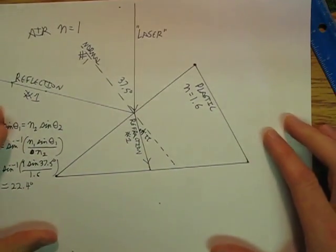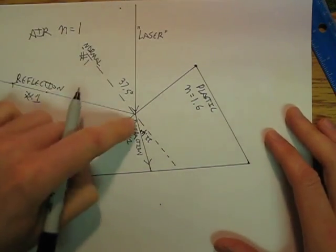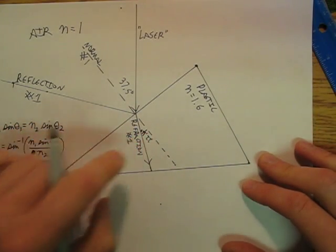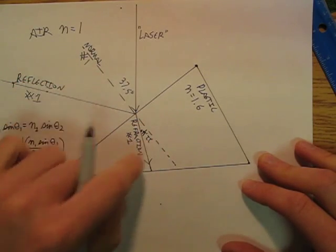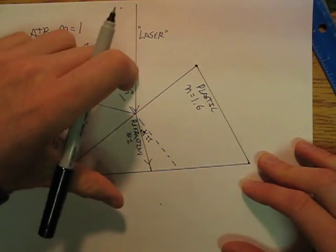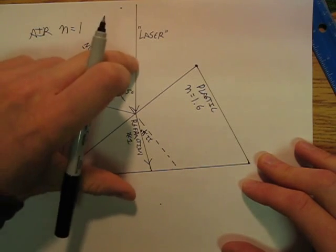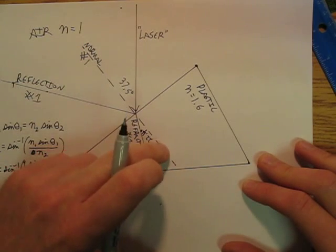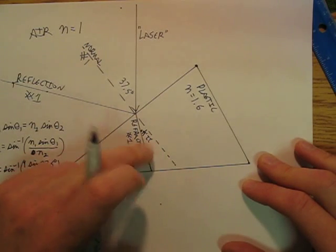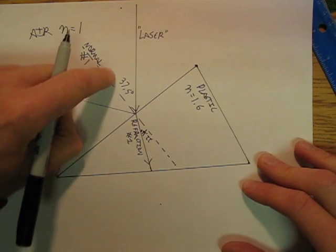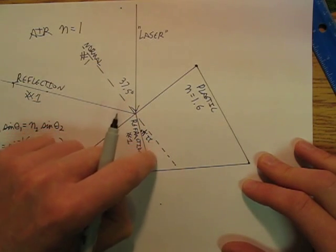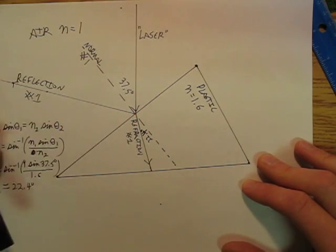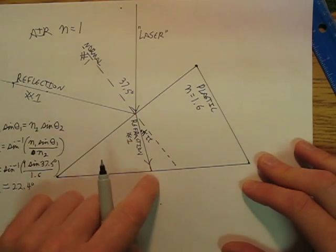The thing I want you to know is that it's a slight bend. A lot of people have trouble figuring out how to measure this 22.4 degrees. Basically, it's 37.5 degrees this way off of normal, and then it's 22.4 degrees this way off of normal. So if I'm going clockwise off of normal on the incoming side, then I want to go clockwise off of this normal on the refracted side. Some of the laser bounces that way, and some of the laser undergoes a bend.